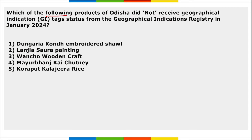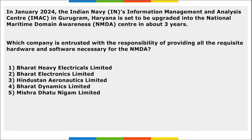Next: which of the following products of Odisha did NOT receive GI tag status? The answer is Vento Wooden Craft — the rest of the listed products recently got the GI tag. The total number of GI-tagged products from Odisha is now 25.